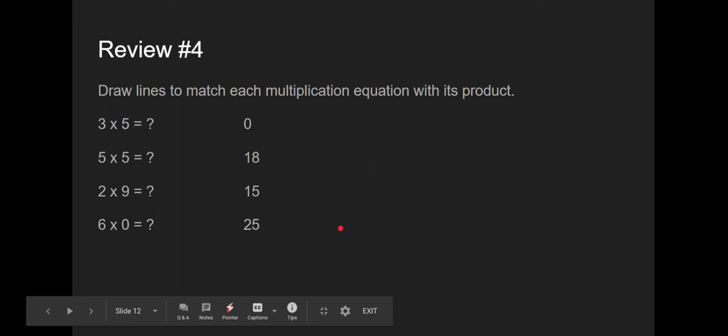Review problem number 4. It says I should be able to draw lines to match each multiplication equation with its product. Let's start at the top. My first problem is 3 times 5 equals question mark. Well, I know if it's times 5 that I could count by 5s, 3 times. This would be 5, 10, 15. So I would draw a line from the top down to the 15. The second problem is 5 times 5. That's 5 groups of 5. So I'm just going to skip count by 5s, 5 times: 5, 10, 15, 20, 25. So therefore, this 5 times 5, I would draw a line going from 5 times 5 down to the number 25.